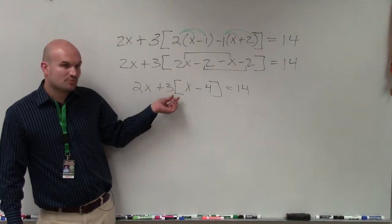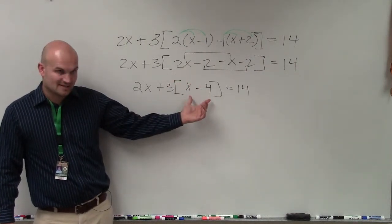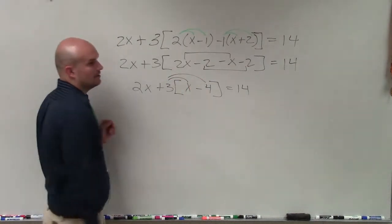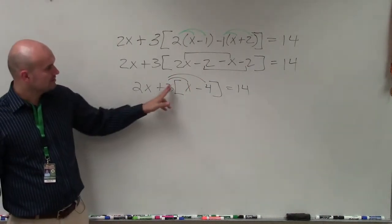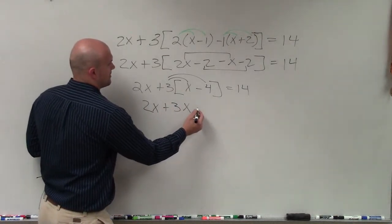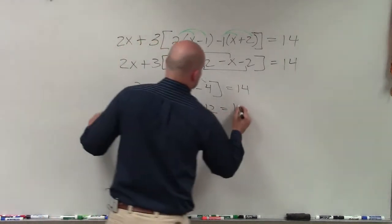Alright, so then the bracket is just like the parentheses. Again, we can't simplify inside here, but then we can look into multiplication and addition, or multiplication. So therefore, I have 2x plus 3x minus 12 equals 14.